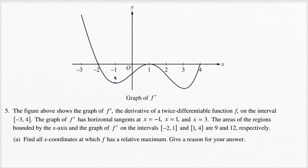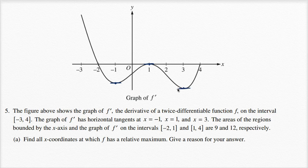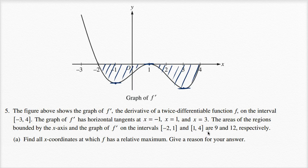So we have a horizontal tangent right over there, a horizontal tangent right over there, and a horizontal tangent right over there. The areas of the regions bounded by the x-axis and the graph of f prime on the closed intervals from negative two to one — this region right over here — and from one to four — this region right over there — are nine and twelve respectively. So that area is nine and that area is twelve.